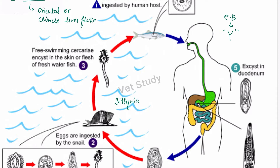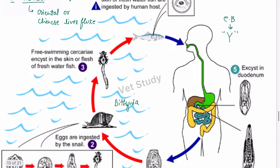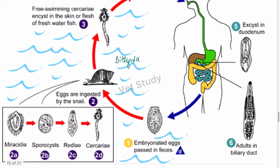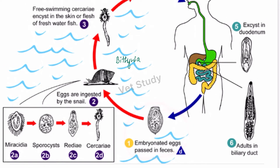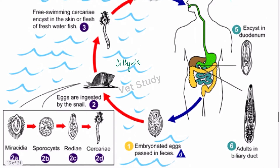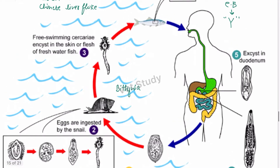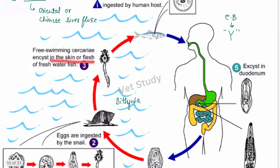Now let's discuss the life cycle. The embryonated eggs are passed in the feces and ingested by the snail. Inside the snail, miracidium, sporocyst, redia, and cercaria stages are formed — importantly, the miracidium is formed inside the snail. Free-swimming cercaria then emerge from the snail.